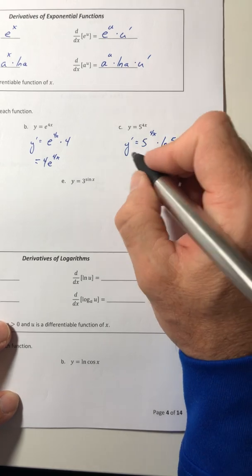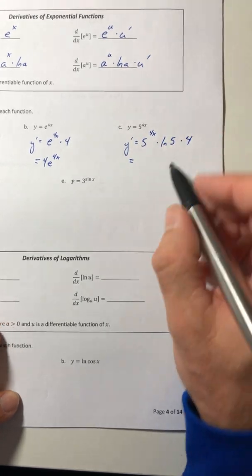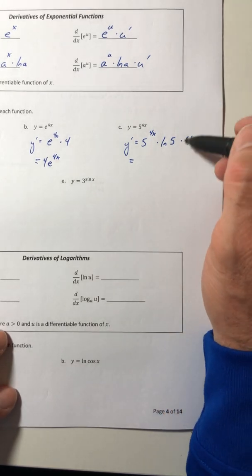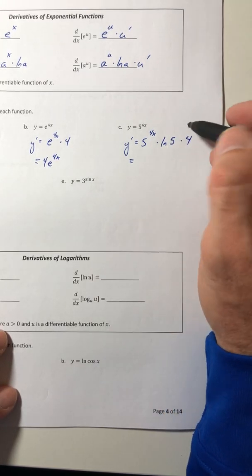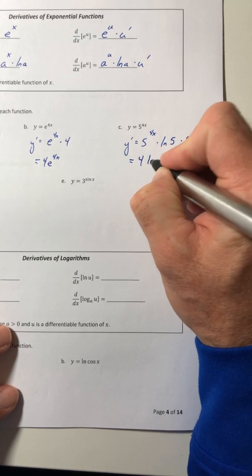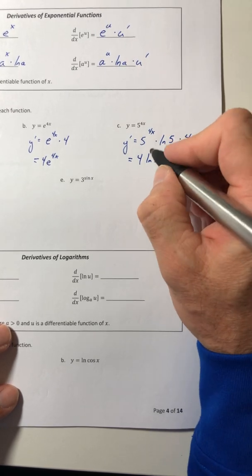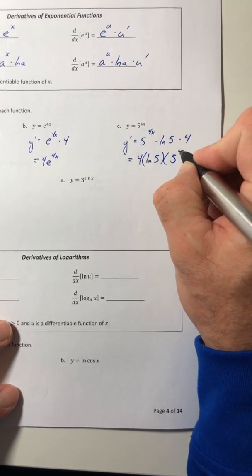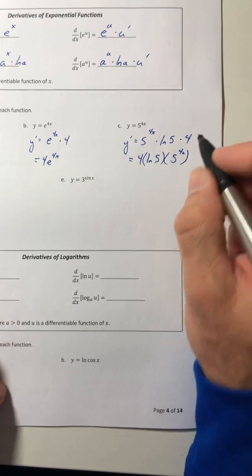Multiply by ln of the base, or ln of 5, and then multiply by the derivative of your exponent, which is 4. So usually when you work with these, the constants go in front of the exponential, so I'm going to put the 4 out front, followed by the ln of 5, followed by the exponential part, just like that.